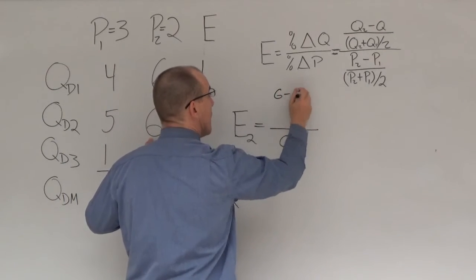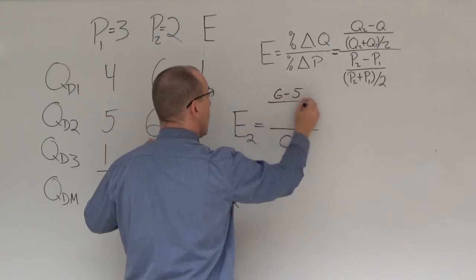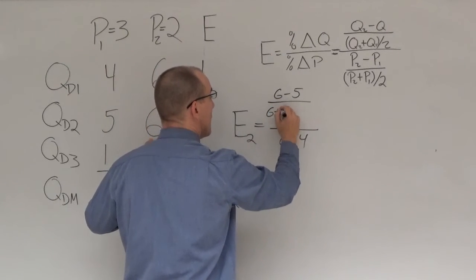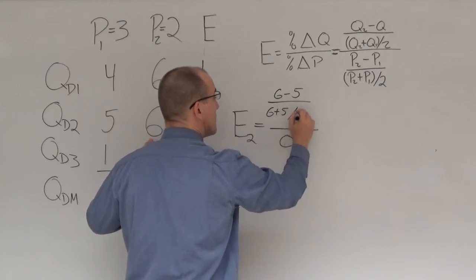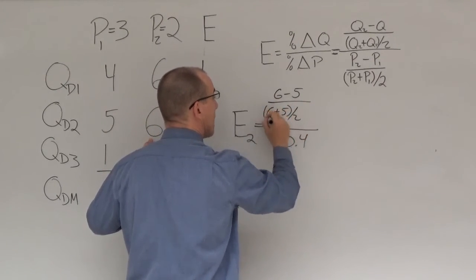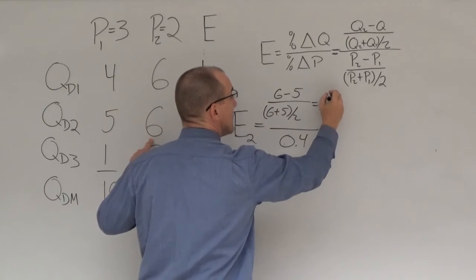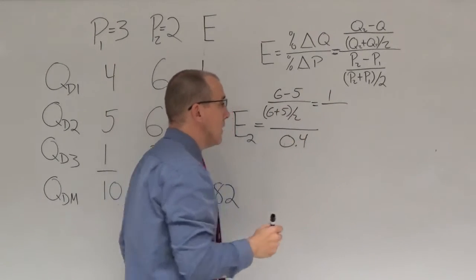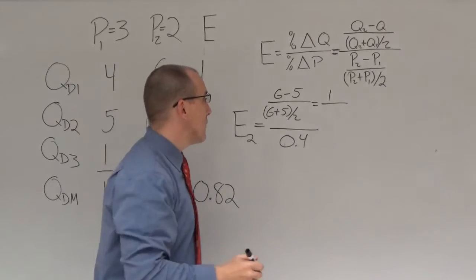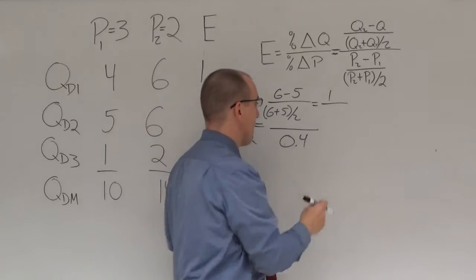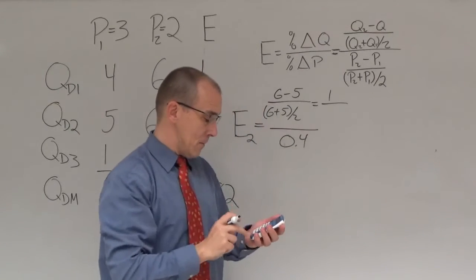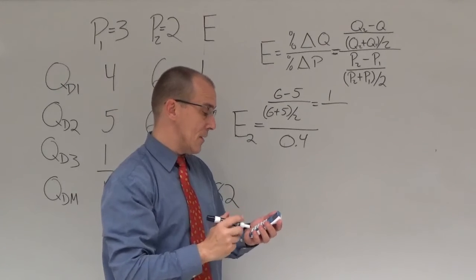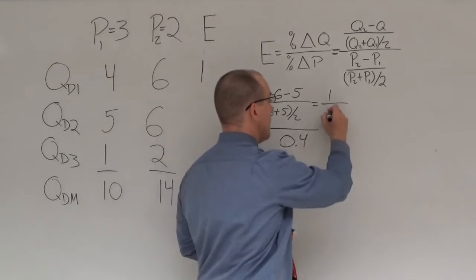For individual number 2, we know the bottom half of the equation is 0.4. For the top part: 6 minus 5 is 1, over (6 plus 5) divided by 2, which is 11 divided by 2, giving 5.5.